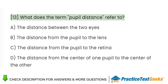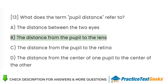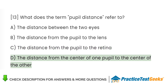What does the term pupil distance refer to? A. The distance between the two eyes. B. The distance from the pupil to the lens. C. The distance from the pupil to the retina. D. The distance from the center of one pupil to the center of the other.